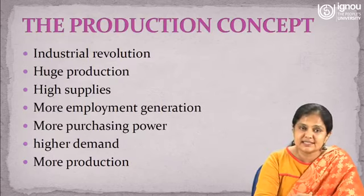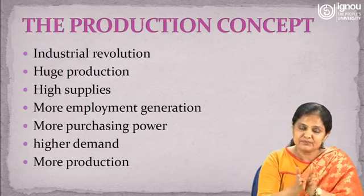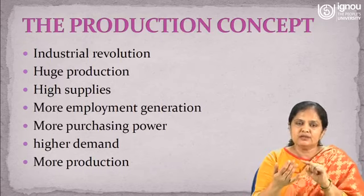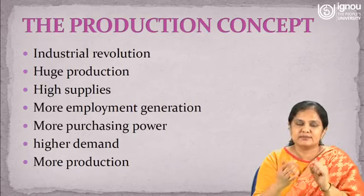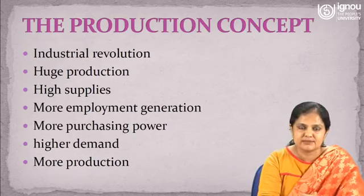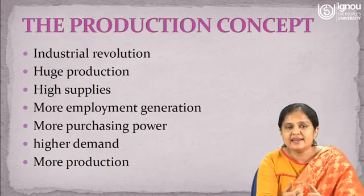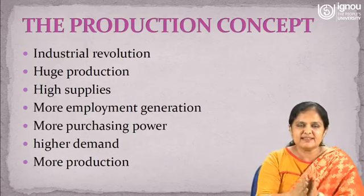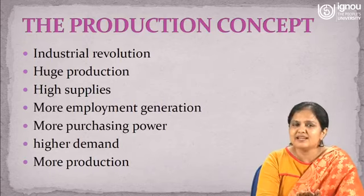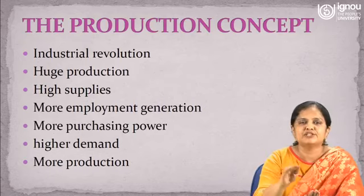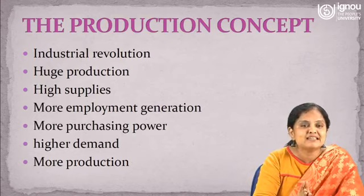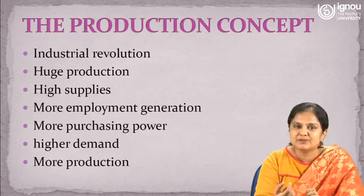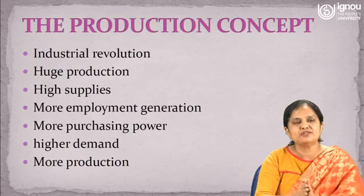The first concept we are going to discuss is the production concept, the first of the four concepts of the post-industrial revolution era. The industrial revolution led to huge production of goods and commodities. When there was huge production of commodities, supplies were also higher. And not only that — with huge production you can see more employment generation, and more employment generation means an increase in purchasing power because people are getting jobs. More purchasing power leads to higher demand, and higher demand leads to higher production again. So the cycle completes itself.